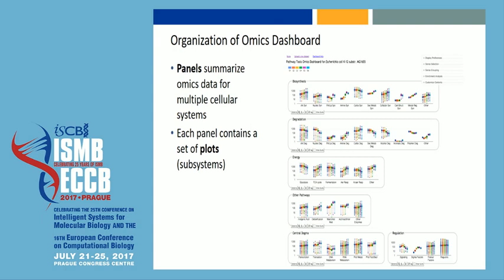Here's a visual summary of the Omics Dashboard. It has two main components called panels. Each horizontal extent is a panel, and a panel consists of a series of plots. Each plot describes one cellular subsystem. Much of the dashboard is devoted to metabolism — the top panel is about biosynthesis with plots for amino acid biosynthesis, nucleotide biosynthesis, fatty acid and lipid biosynthesis, et cetera.